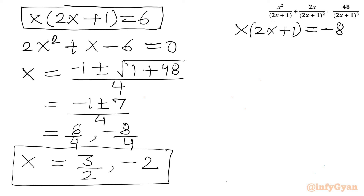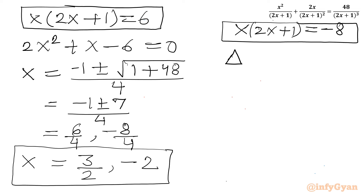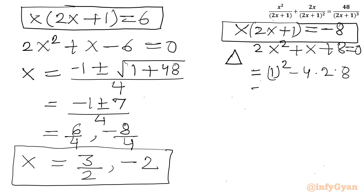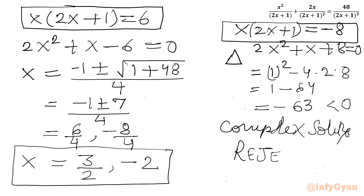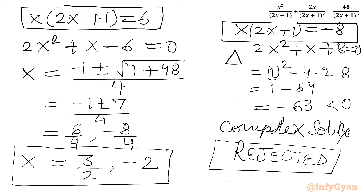Now for the second equation: x(2x+1) = −8, which gives 2x² + x + 8 = 0. I will check the discriminant only: b² − 4ac = 1 − 4(2)(8) = 1 − 64 = −63. Since the discriminant is negative, this equation generates complex solutions, so we reject it. The two accepted solutions are x = 3/2 and x = −2, which we will verify at the end.